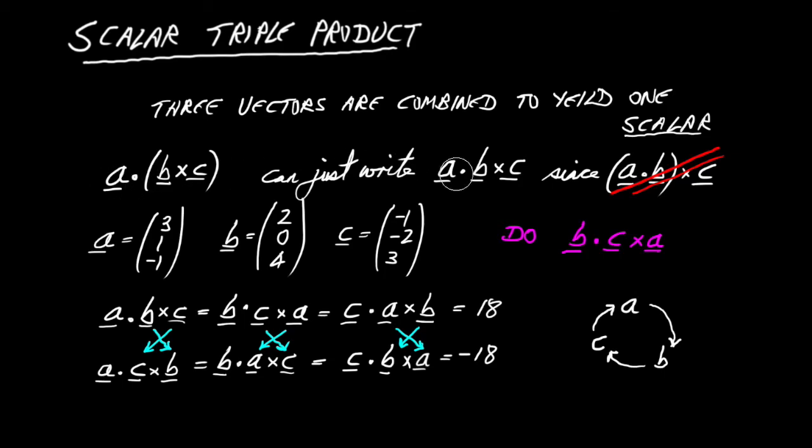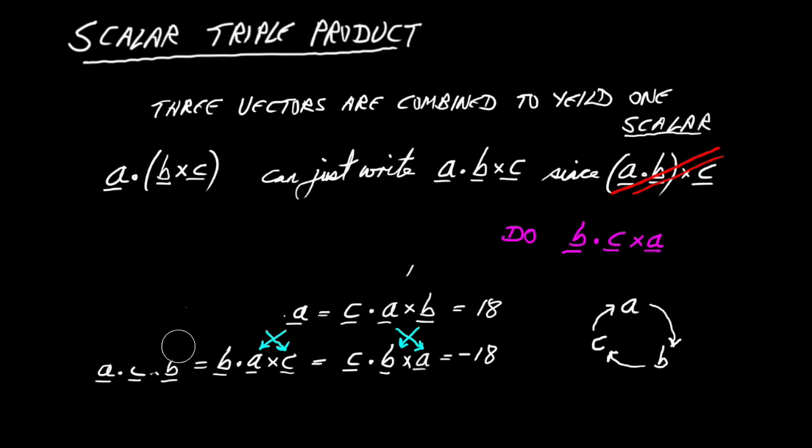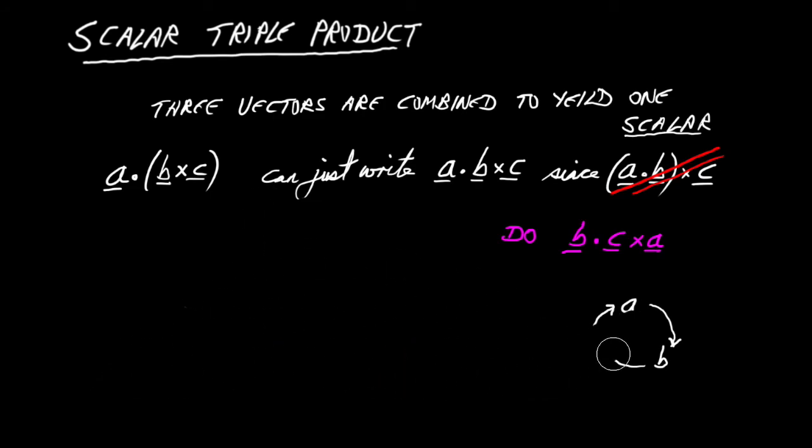So that's, I think, all we need to do as practice for doing the scalar triple product and knowing what we ought to get. Let's think about something else. I'm going to introduce you to something called the parallelipiped. That's the way I say it. I'm not sure how to pronounce it. Parallelipiped? Anyway...